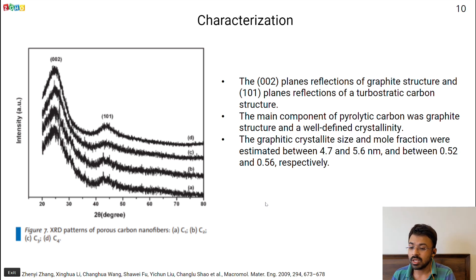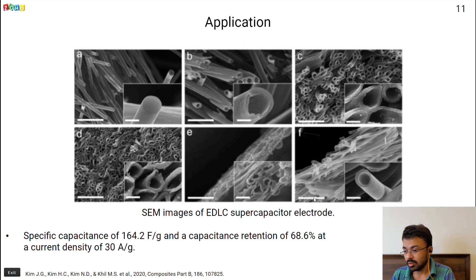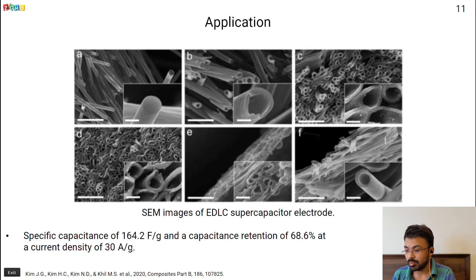This brings us to the application of such carbon materials as EDLC supercapacitor electrodes. A coaxial type of feed was used to generate hollow carbon fibers, achieving a capacitance of around 164.2 farads per gram, with a capacitance retention of around 68.6 percent at 30 amperes per gram.